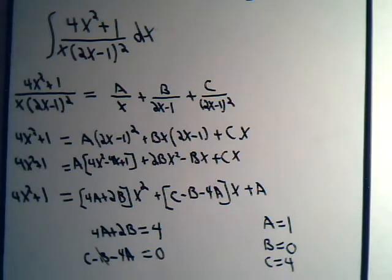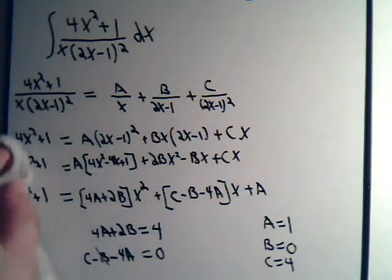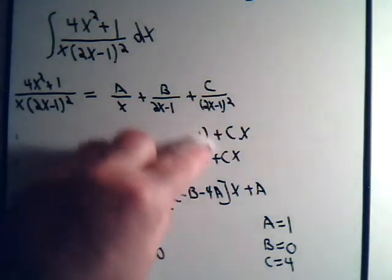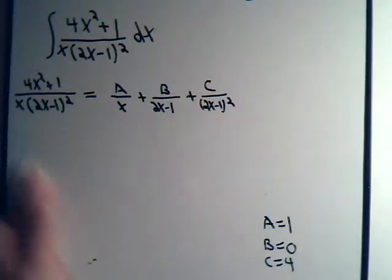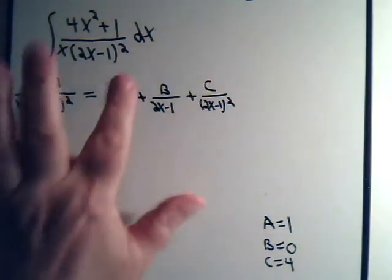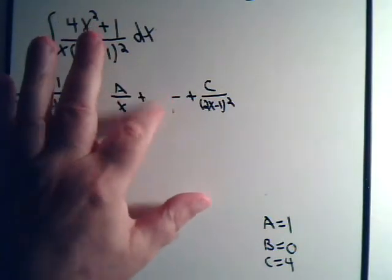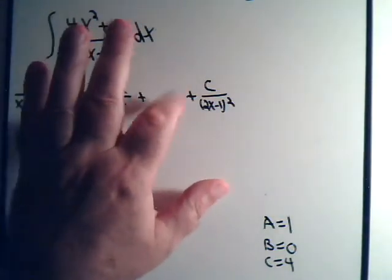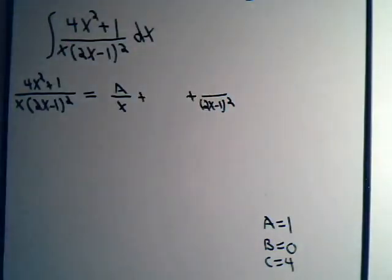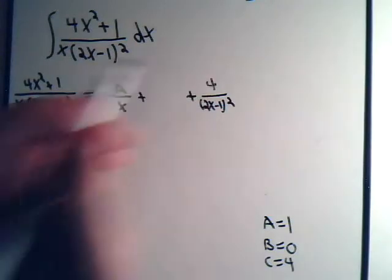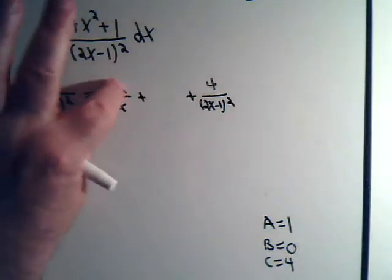So let's erase this stuff here. B is 0. So this is gone. C is equal to 4. And A equals 1.